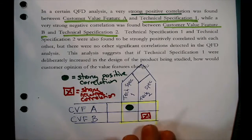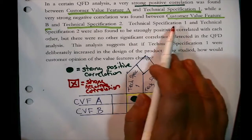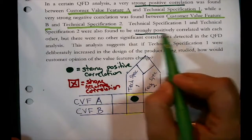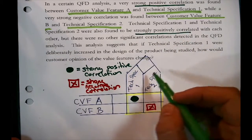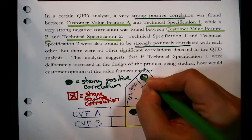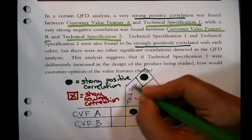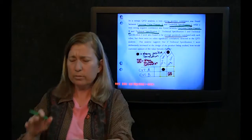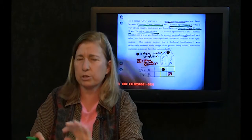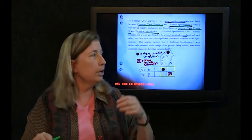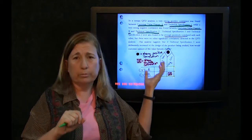Technical specification 1 and technical specification 2 were found to be strongly positively correlated. That relationship goes in the diamond in the roof of the house of quality — that's what the roof was for, to store any relationship between the two specifications. Since the problem didn't give us any more information, the diagram is now finished. All I've done is repeat the given information in a visual fashion.